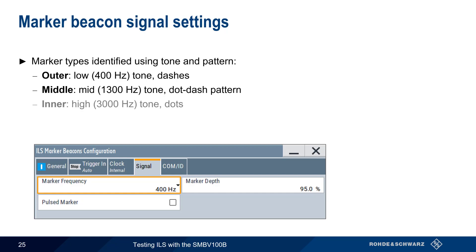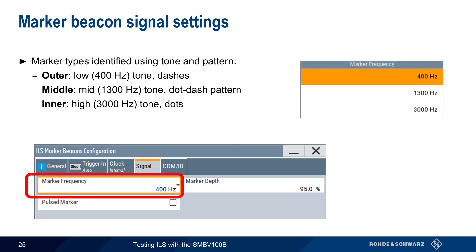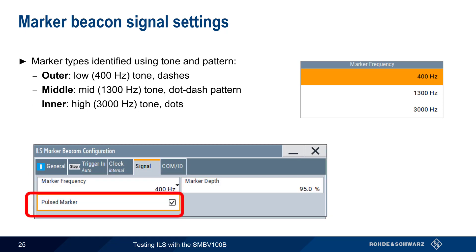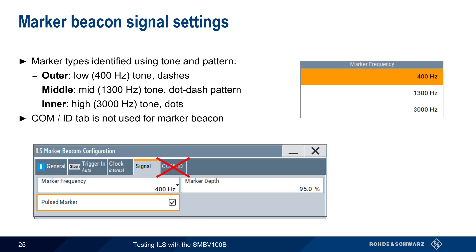The inner marker uses a 3000 Hz tone sent as a series of dots. The tone is chosen using the Marker Frequency parameter and is sent continuously by default. The appropriate intermittent pattern of dots and dashes is turned on by enabling the Pulsed Marker parameter. Note that the COMID tab is not used when generating marker beacon signals.